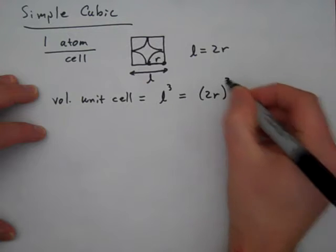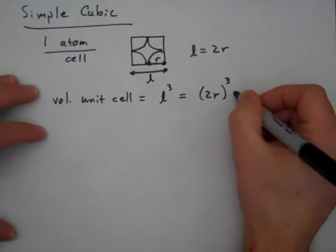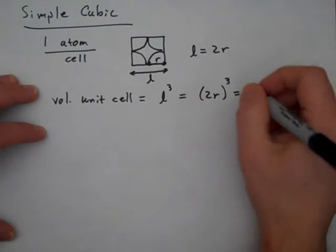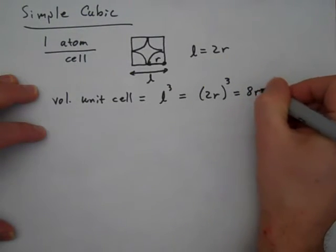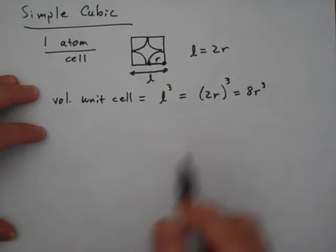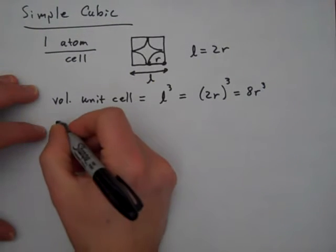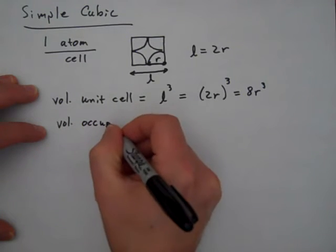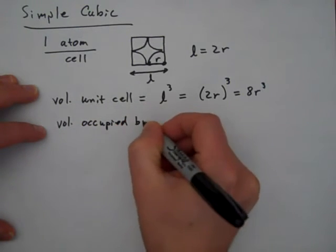It's 2r. So I've got 2r cubed. And so I can rewrite that. 2 cubed is 2 times 2, which is 4, times 2, which is 8. So that's 8r cubed. So I'm going to write the volume of the unit cell, the whole unit cell, is that number.